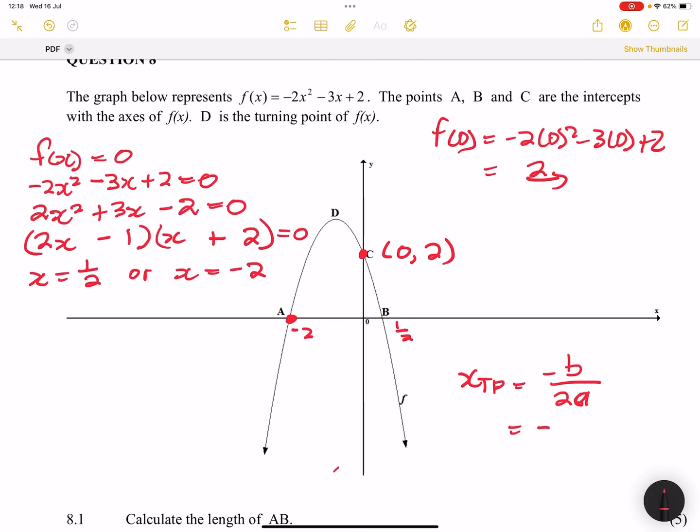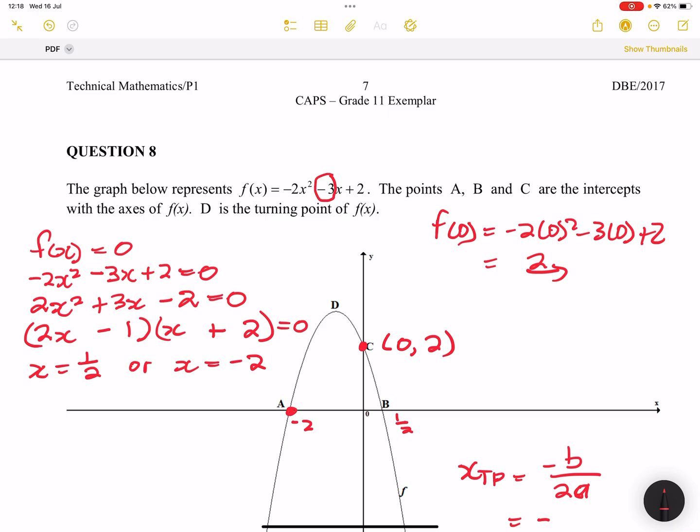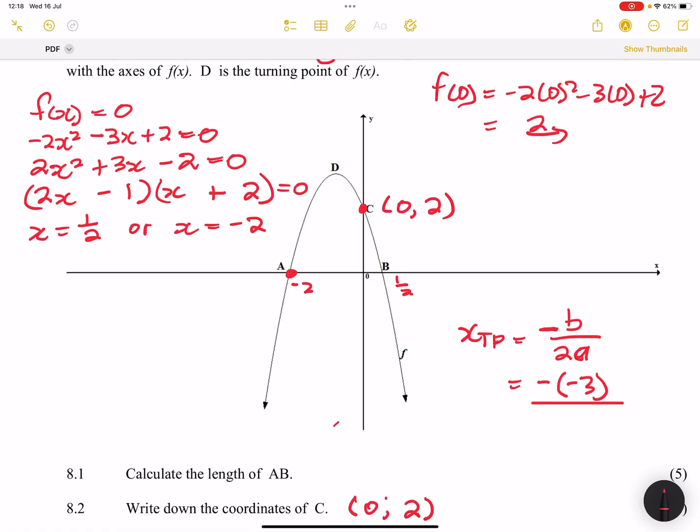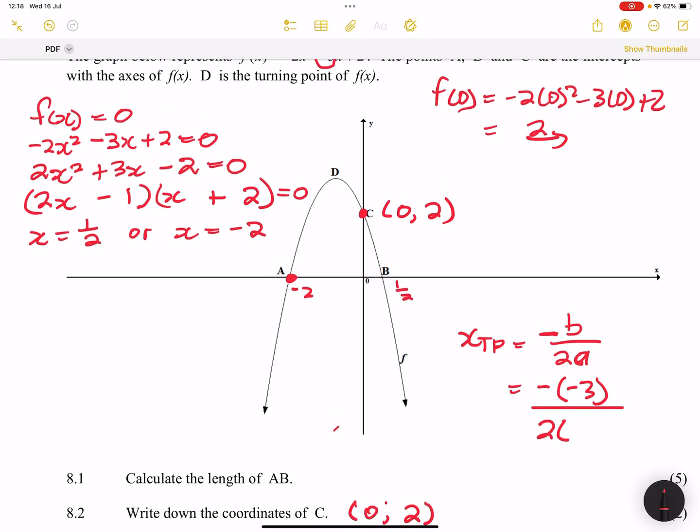So our b value is the coefficient of the x term. So that's negative, that's minus a negative 3. So remember that minus b was already there. So minus, and our b value is -3 divided by 2 times a is -2. So what do we have? We end up with -3/4. So of course, a negative times a negative at the top there would be positive 3, but 2 times -2 would be -4. So the answer would be -3/4.